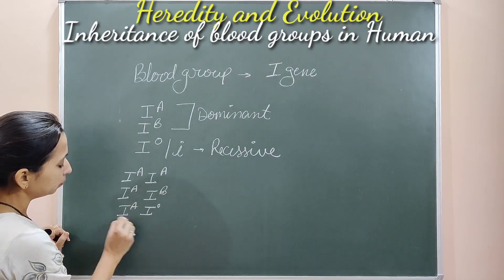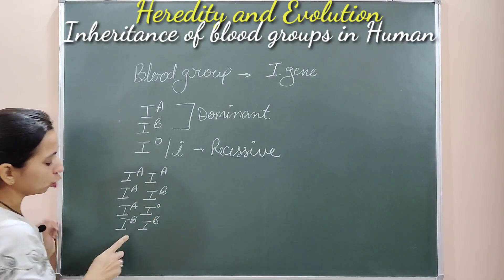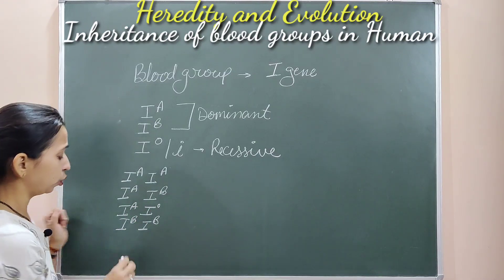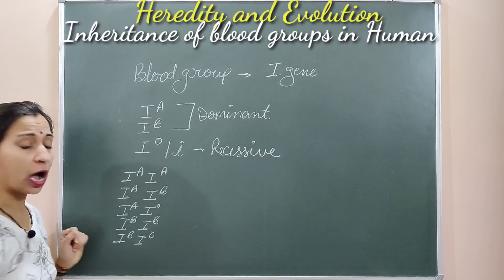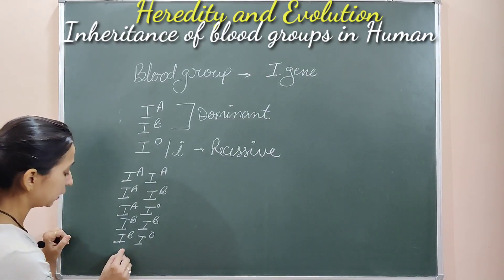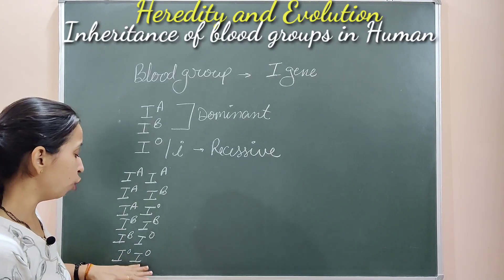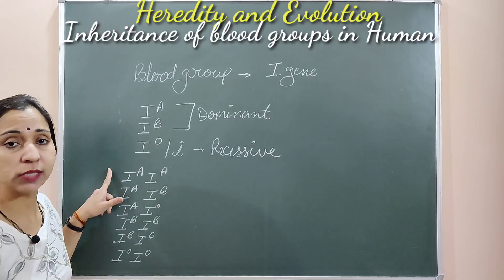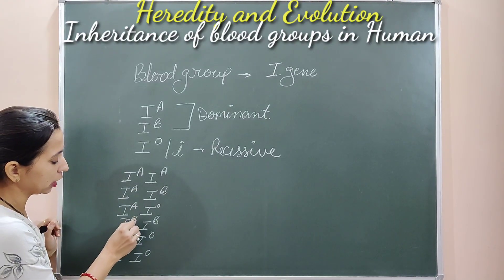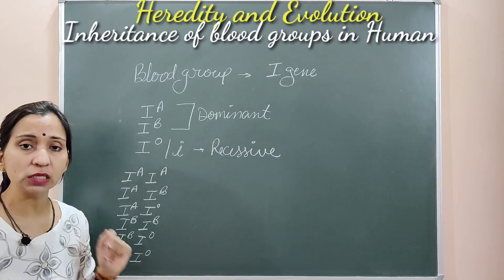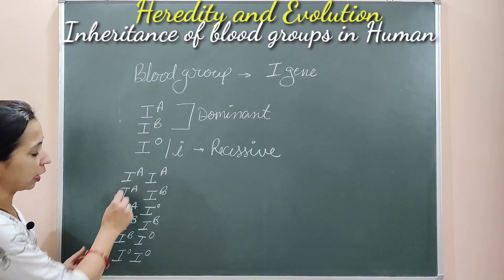For Ib, the allele can combine with another Ib (homozygous dominant), or with Io (heterozygous). The last possibility is Io with Io, which is the homozygous recessive condition. So Ia-Ia and Ib-Ib are homozygous dominant conditions, Io-Io is the homozygous recessive condition, and the rest are heterozygous conditions.